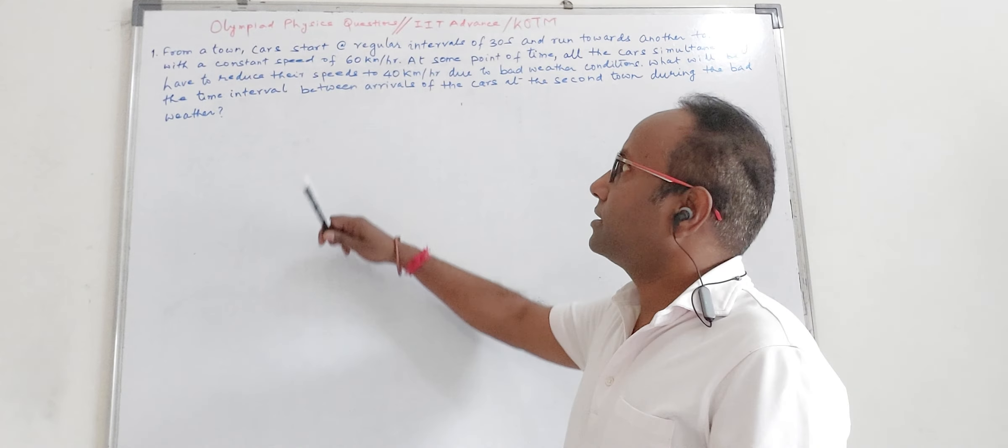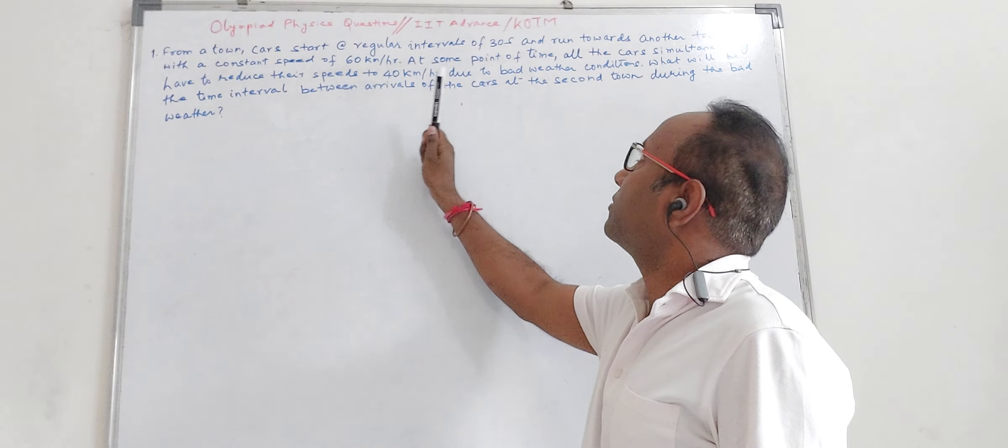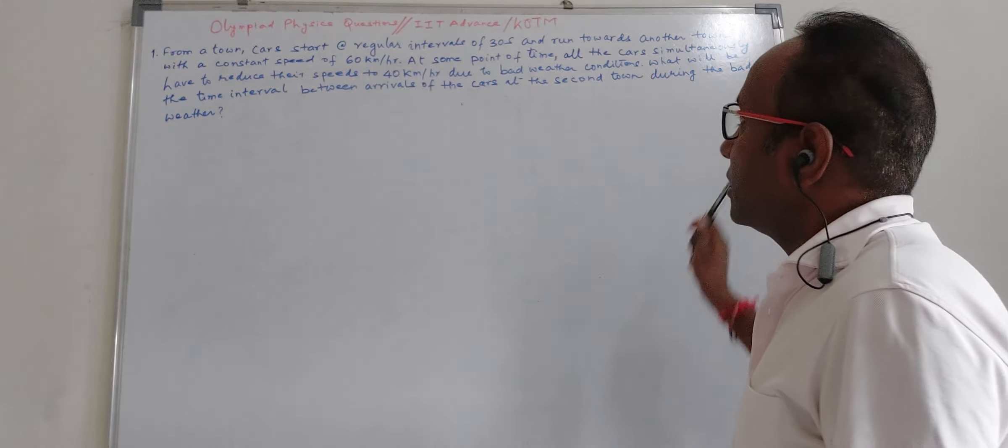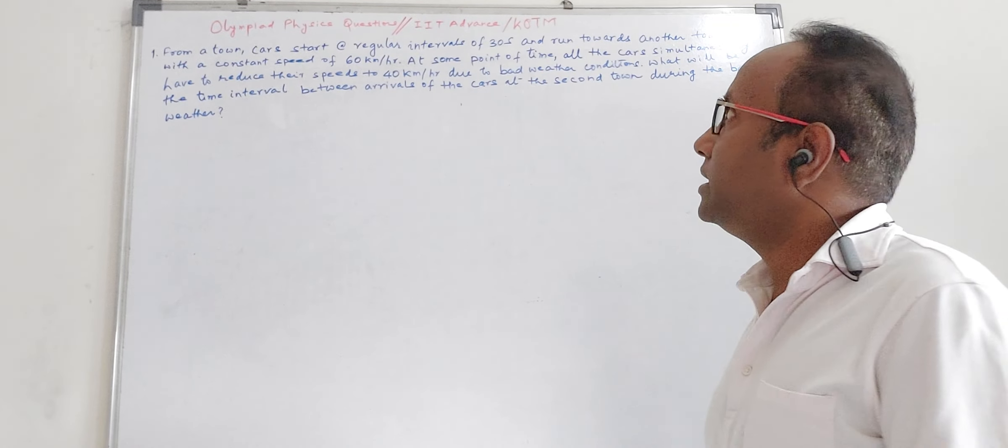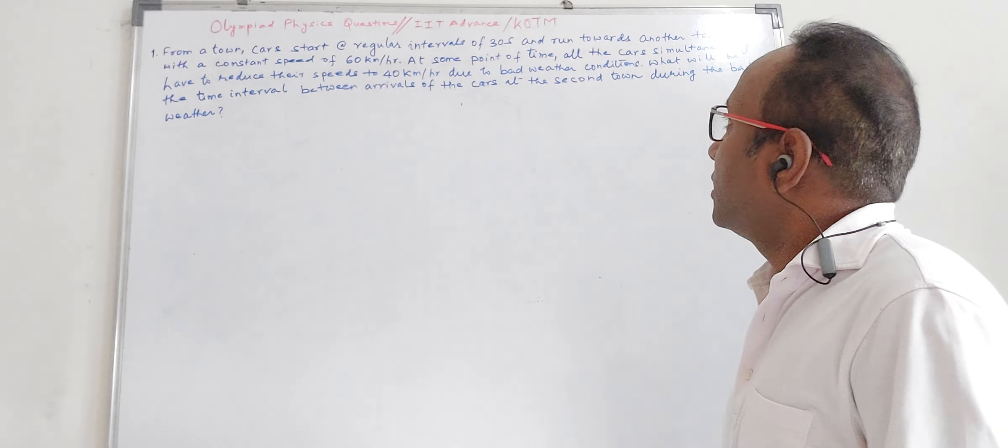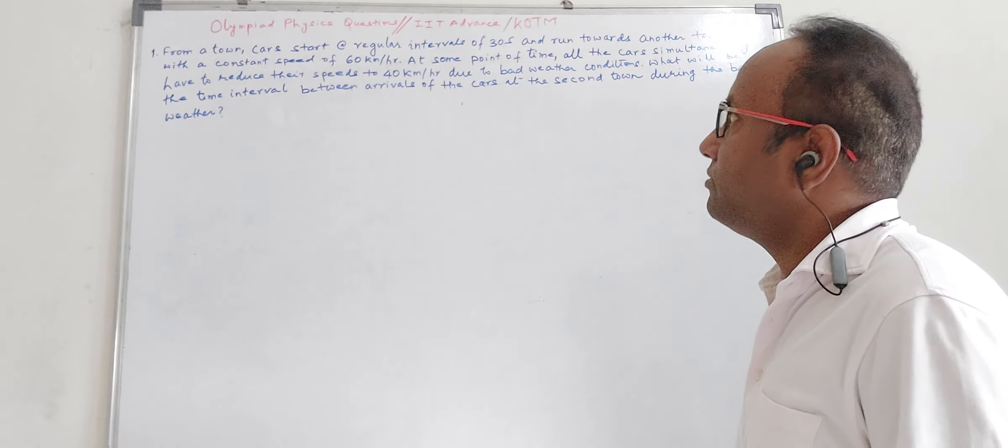So the question goes like this: From a town, cars start at regular intervals of 30 seconds and run towards another town with a constant speed of 60 km per hour. At some point of time, all the cars simultaneously have